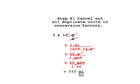Step 6: Cancel out all duplicate units in conversion factors. We can use the same idea as in algebra to cancel out all duplicate units in the problem, so long as one is in the numerator and one is in the denominator. This leaves us with only miles per hour.